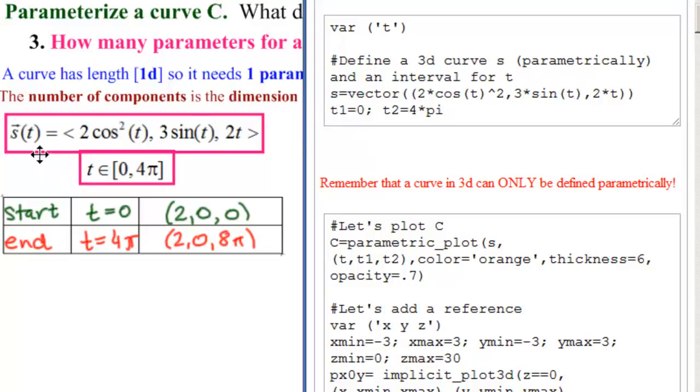Let's match it up. s equals vector, two parentheses, the first component right here, two times cosine of t squared, and then a comma, three times sine of t, comma, two times t, and both parentheses. Hit enter.